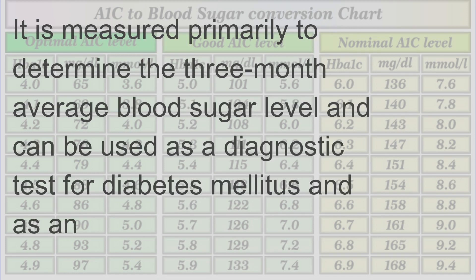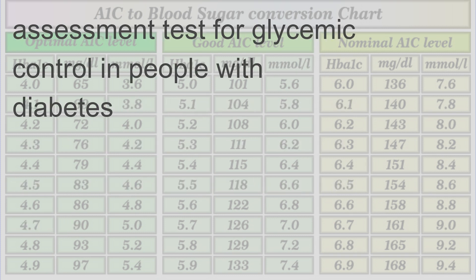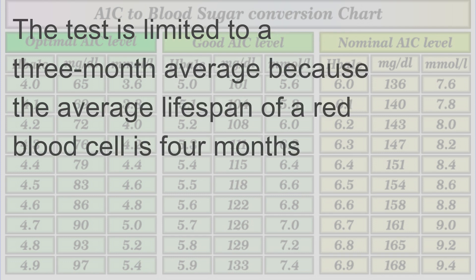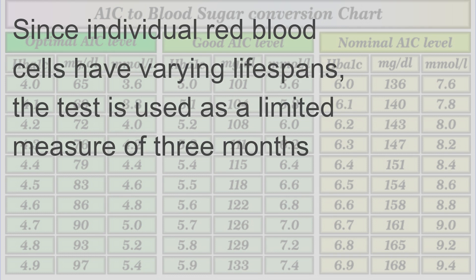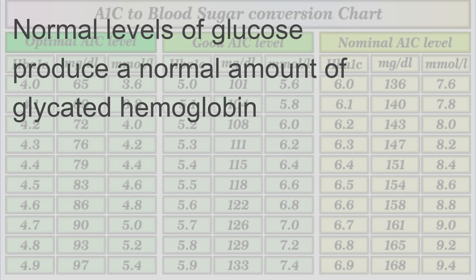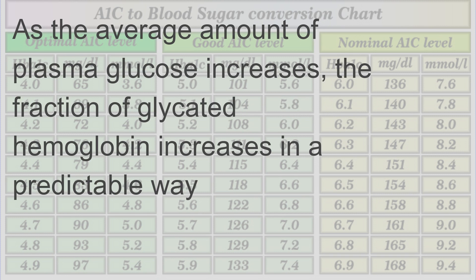HbA1c is a measure of the beta-N1-deoxyfructosyl component of hemoglobin. It is measured primarily to determine the three-month average blood sugar level and can be used as a diagnostic test for diabetes mellitus. The test is limited to a three-month average because the average lifespan of a red blood cell is four months. Normal levels of glucose produce a normal amount of glycated hemoglobin.